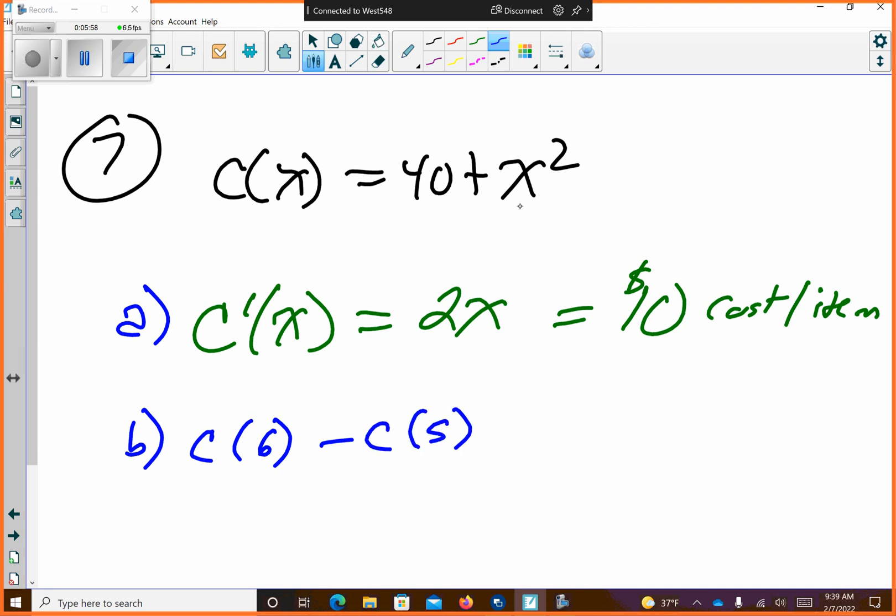Answer to b. Calculate c at 6 minus c at 5. So all this is, I'm going to plug my numbers back in here. So I'm going to get 40 plus 36 minus 40 plus 25. So 40s cancel out. So 36 minus 25 is 9. So 9 basically becomes the rate of change at c(6) to c(5), something like that. That's all it is.